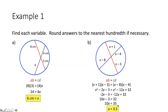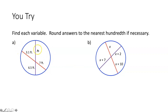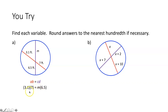We again have two chords that intersect inside of a circle, separating each chord into two separate chord segments. Using the segments of chords theorem, we take 3.1 multiplied by 7 and set that equal to m times 6.5. We then solve for m by multiplying and dividing both sides by 6.5. We get m is approximately equal to 3.34 feet when we round to the nearest hundredth.